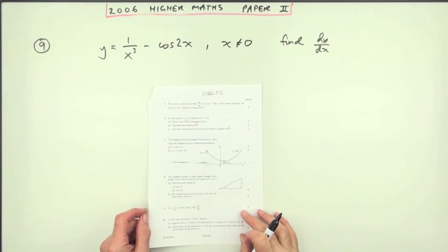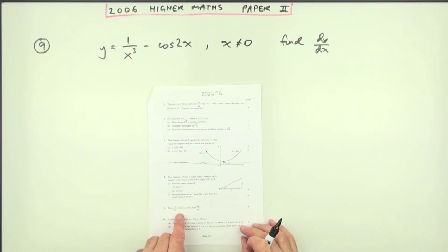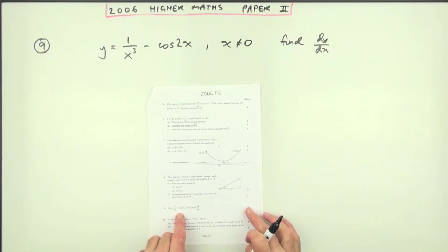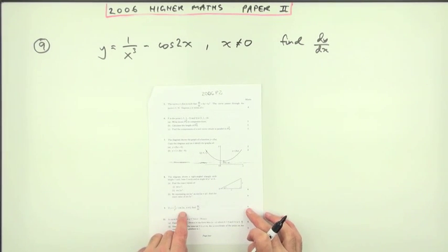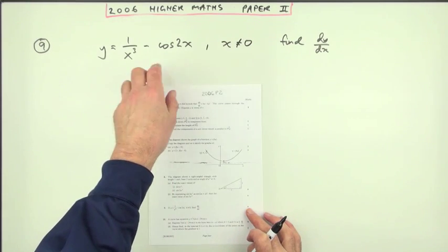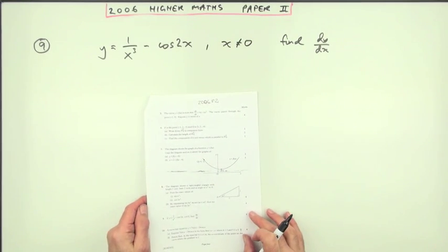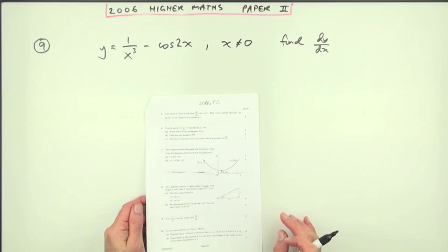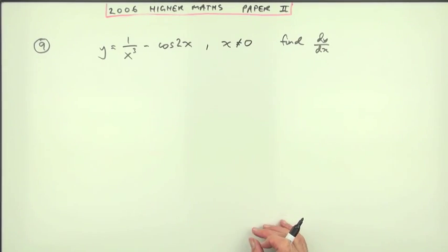Number 9 from the 2006 Higher Maths Paper 2, differentiation for four marks. That must be about the quickest four marks you'll ever get. If you were just to rattle that down quickly and know what you were doing, you could probably do that in about 10 seconds. So four marks, which is two marks for each of them.